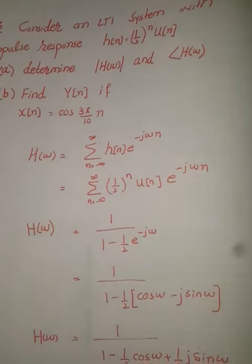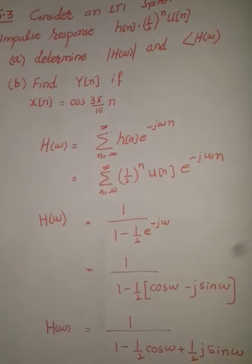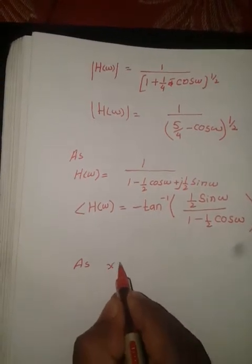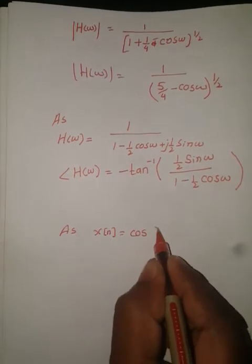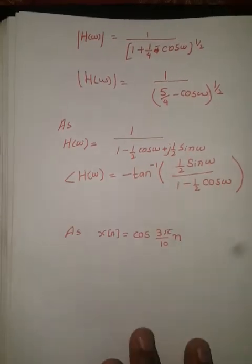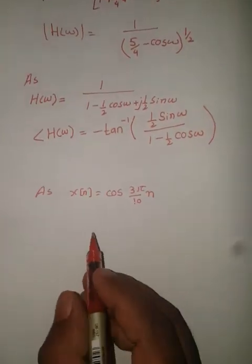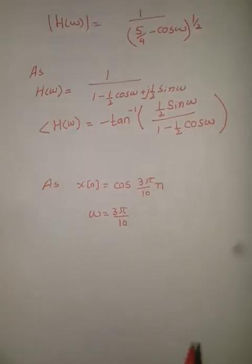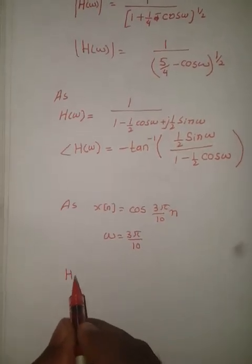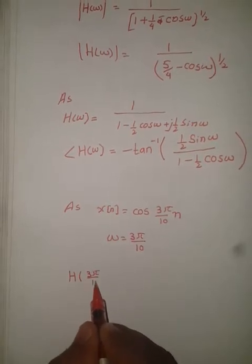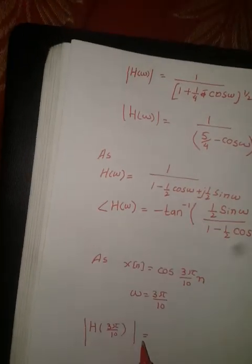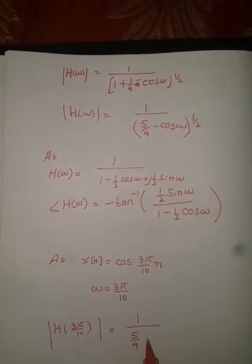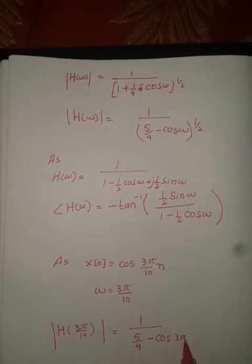Now we have to find Y[n] if x[n] = cos(3π/10 · n). This is the input, and it has only one frequency: Ω = 3π/10. So now we have to calculate H(3π/10) — the magnitude of the frequency response at this frequency.